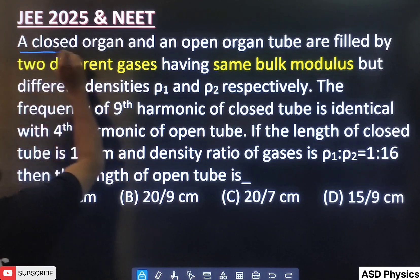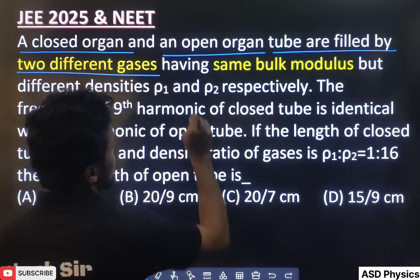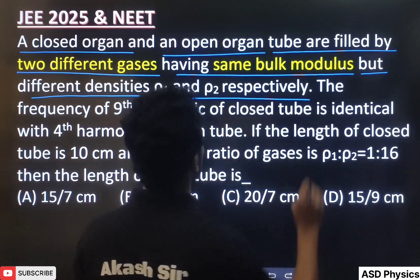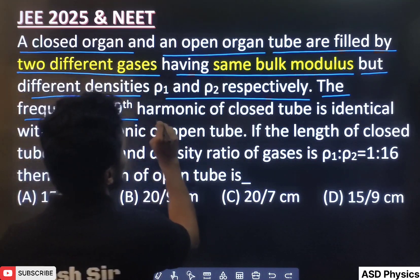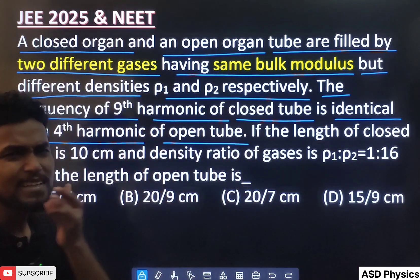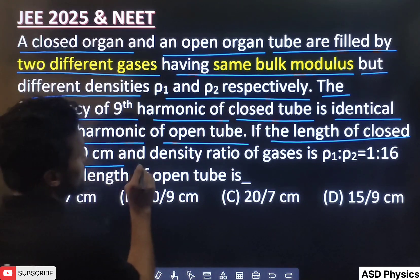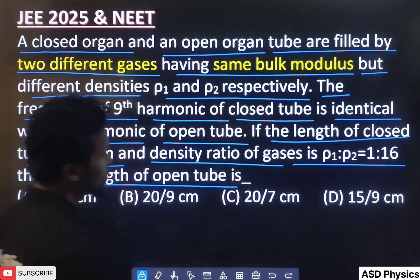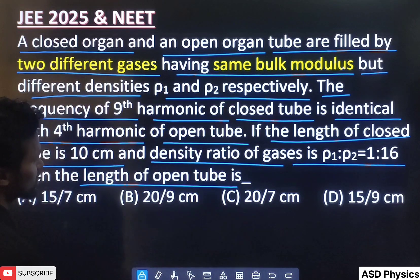The question is: a closed organ tube and an open organ tube are filled by two different gases having the same bulk modulus but different densities, rho1 and rho2 respectively. That means the closed organ pipe has density rho1 and the open organ pipe has density rho2. The frequency of the 9th harmonic of the closed tube is identical with the 4th harmonic of the open tube. If the length of the closed organ tube is 10 cm and the density ratio of gases is 1:16, then what is the length of the open tube? The question looks big, but if you understand the basics and note down all the given data, it becomes very easy.